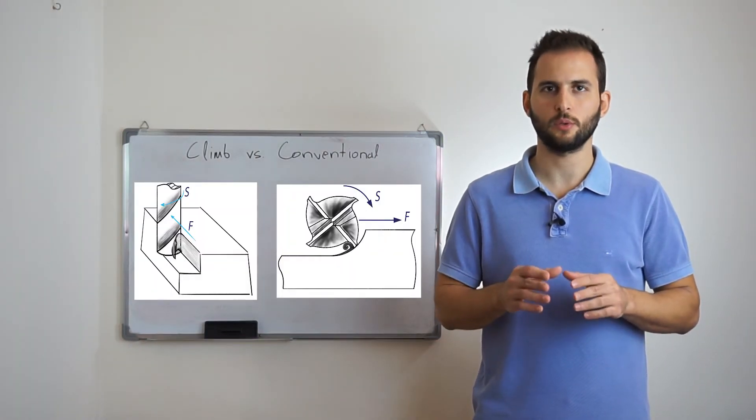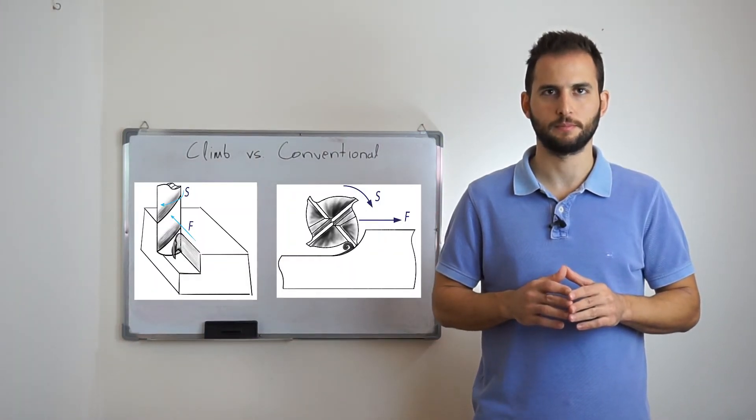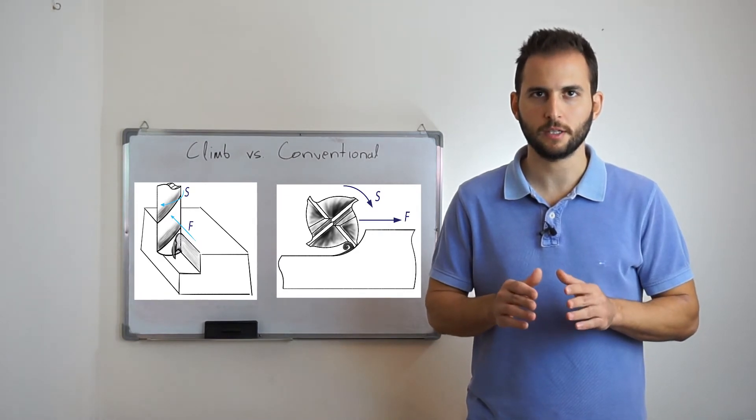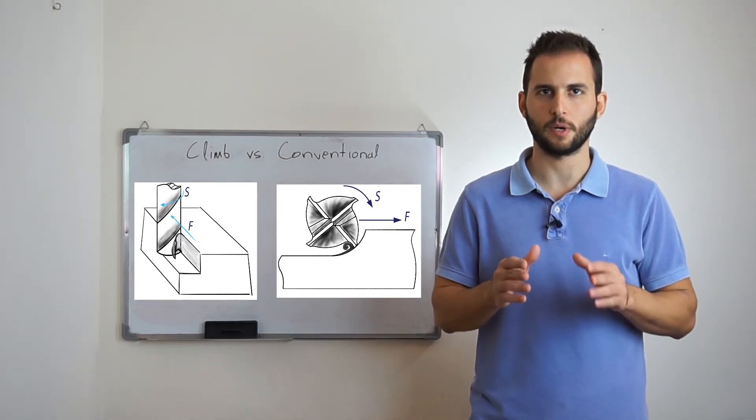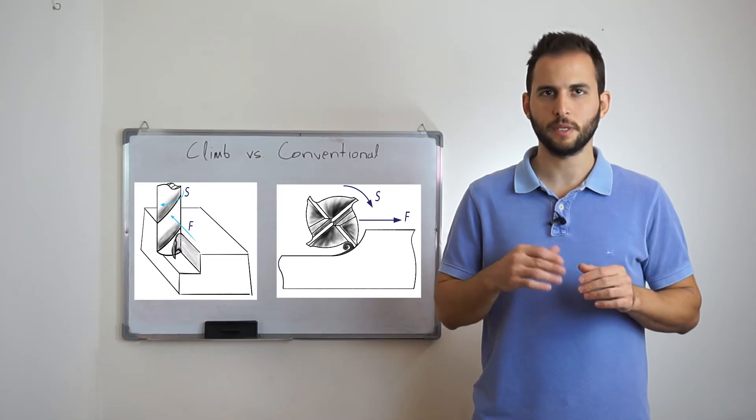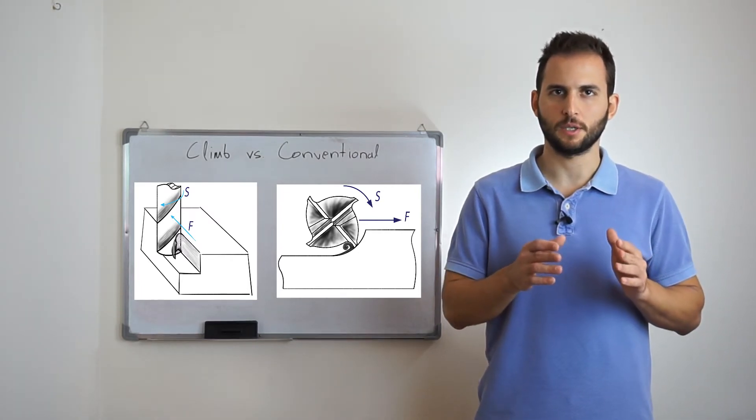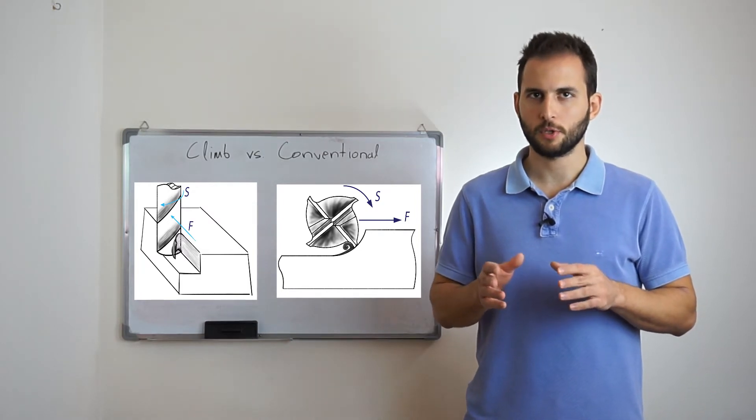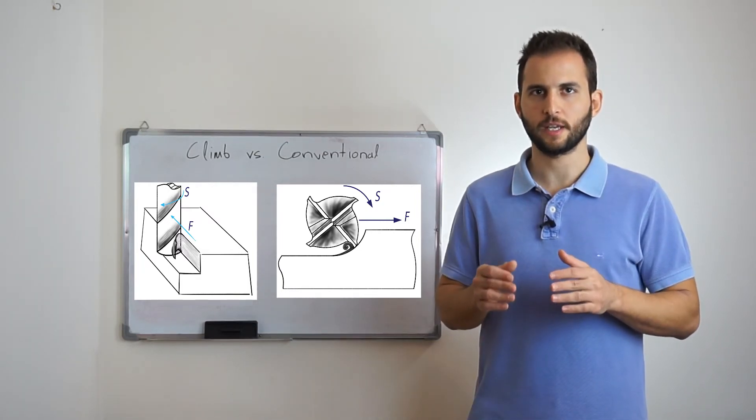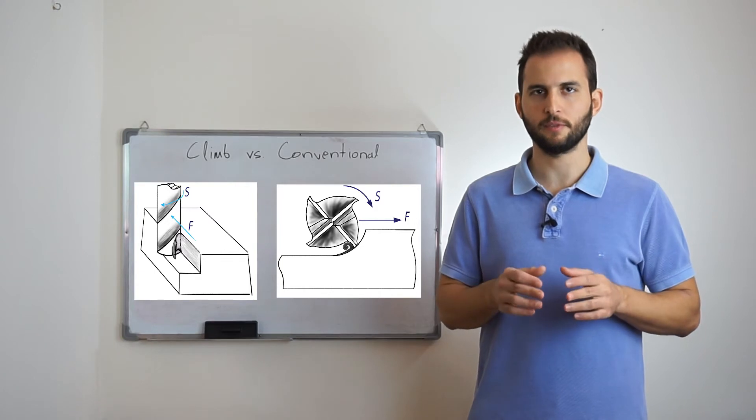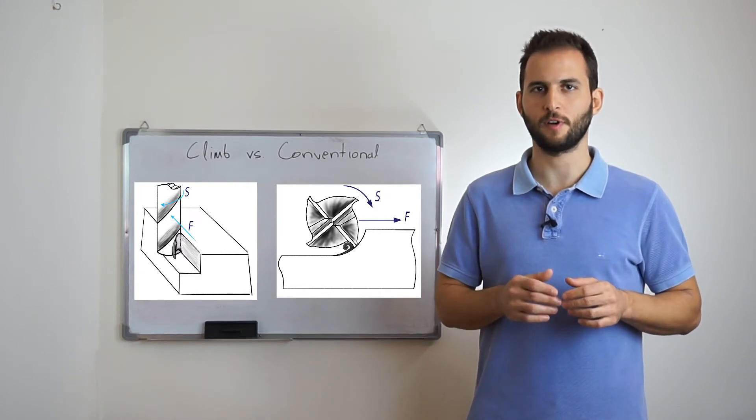Climb milling is usually the way to go for the generality of machining cases. During climb milling, the teeth of the cutting tool directly engage with the material without rubbing, and as a result there's better dimensional accuracy on the final part, better life expectancy of the cutting tool, and lower power consumption during machining. Also, the direct engagement of the cutting tool teeth with the material prevents work hardening into the surface of the final part.